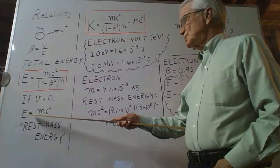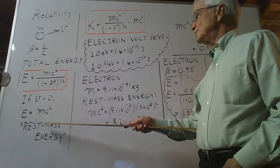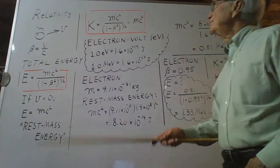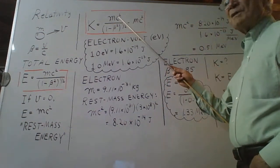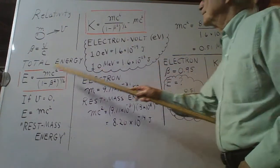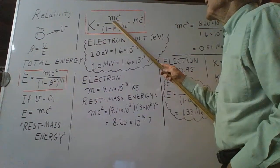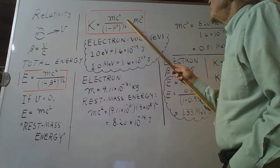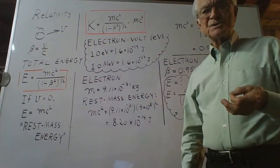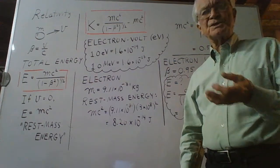For obvious reasons this energy mc squared is called the rest mass energy of that object. The kinetic energy of our object is the total energy shown here, this is E, minus that part of the total energy that the object possesses when it's not moving at all, when it's at rest.